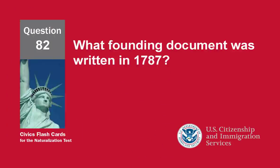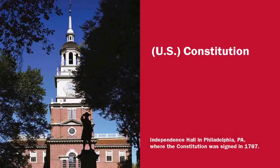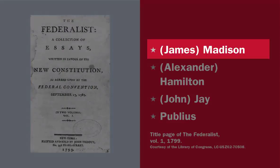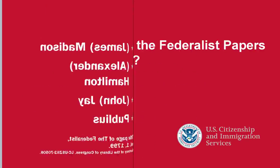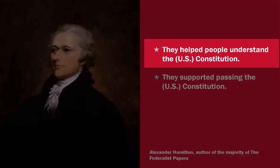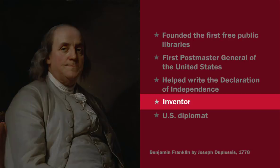What founding document was written in 1787? The US Constitution. The Federalist Papers supported the passage of the US Constitution. Name one of the writers. James Madison. Why were the Federalist Papers important? They helped people understand the US Constitution. Benjamin Franklin is famous for many things. Name one. Inventor.